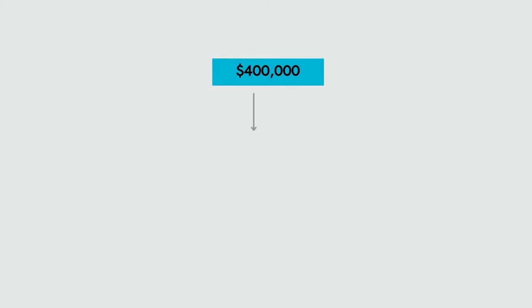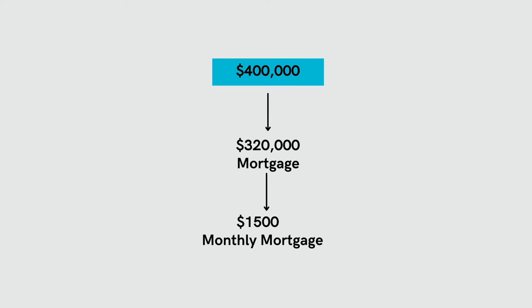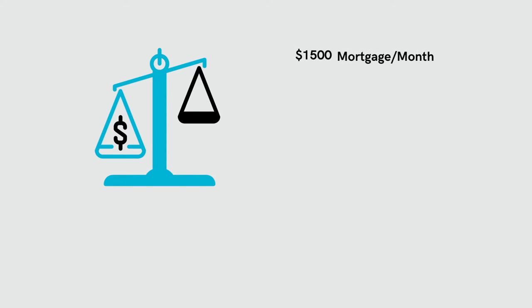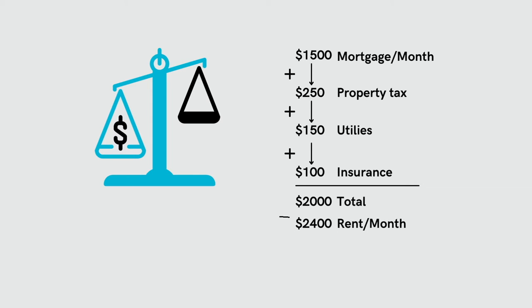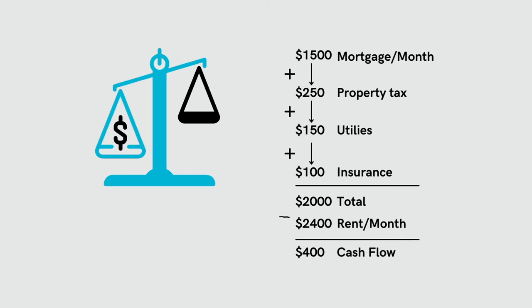Say we are looking to acquire a property worth $400,000 and we get a mortgage on that property for $320,000. At today's interest rates, our monthly mortgage payment would be about $1,500 a month. Let's estimate we'd also pay $250 a month in property taxes, $150 a month in utilities, and $100 a month in insurance. Add that all up and our total monthly expenses are $2,000. If this property could rent for $2,400 a month, using only these four expense categories, we'd estimate cash flow of $400 a month.